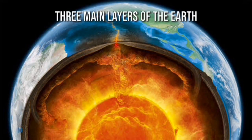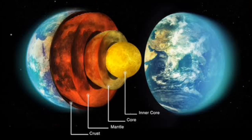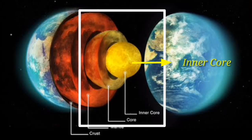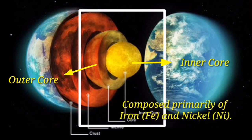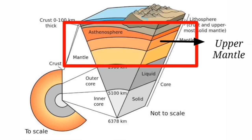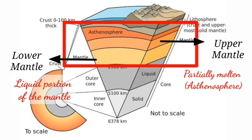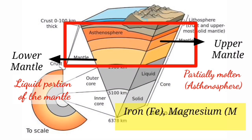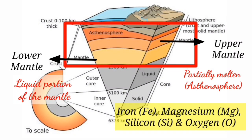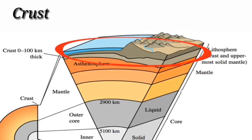Earth can be divided into three main layers: the core, the mantle, and the crust. Each of these layers can be further divided into two parts. The solid inner core and the liquid outer core are composed primarily of iron and nickel. The upper mantle is partially molten and the lower mantle is the deeper portion of the mantle, composed of iron, magnesium, silicon, and oxygen.